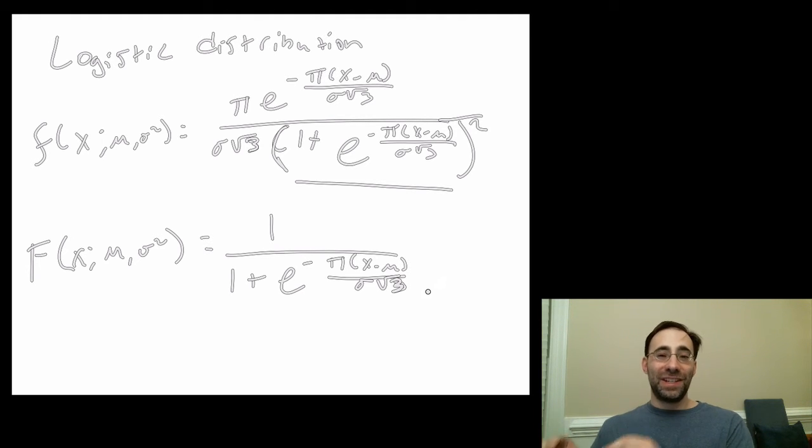So there you go. That's the logistic distribution. You've seen it. You've seen what it looks like. It comes up a lot in stats, and you'll see a lot more about this in stats classes when dealing with binary choice. That's it. In the last module, we'll do a grab bag of different distributions that you'll see much less often. Thank you very much.